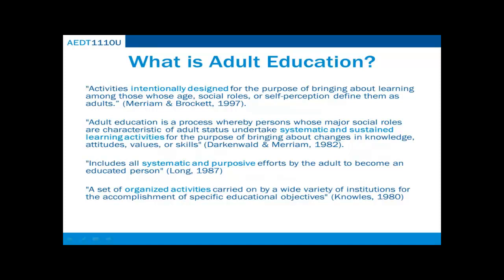Merriam and Brockett define adult education as activities that are intentionally designed for the purpose of bringing about learning among those whose age, social roles, or self-perception define them as adults. Durk and Walden Merriam consider adult education as a process whereby persons whose major social roles are characteristic of adult status undertake systematic and sustained learning activities for the purpose of bringing about changes in knowledge, attitudes, values, or skills. Long defines adult education as all systematic and purposeful efforts by adults to become an educated person. And Knowles defines adult education as a set of organized activities carried on by a wide variety of institutions for the accomplishment of specific educational objectives.